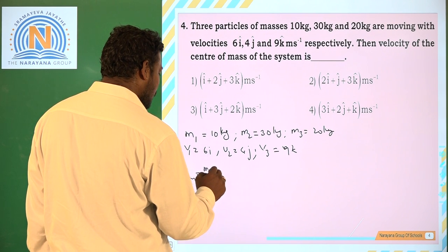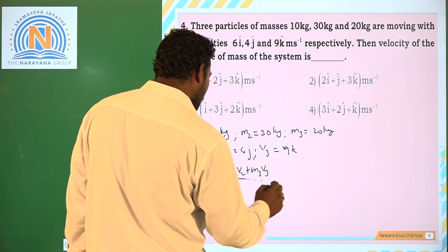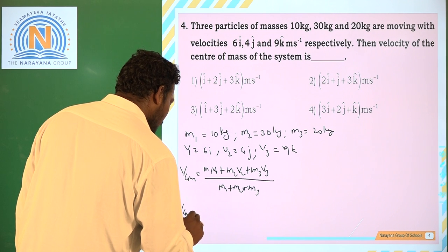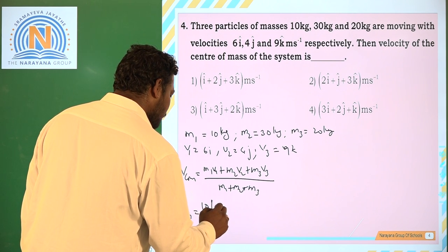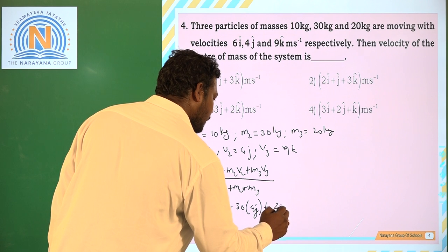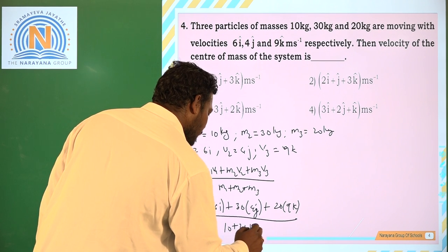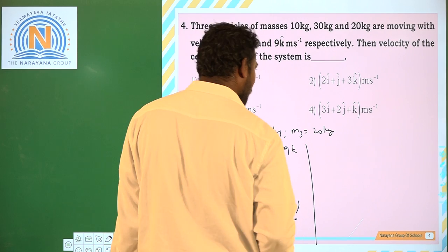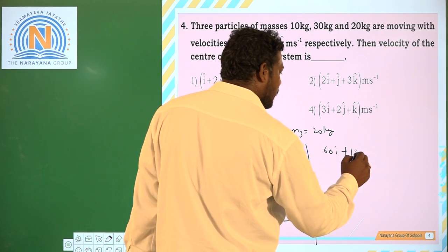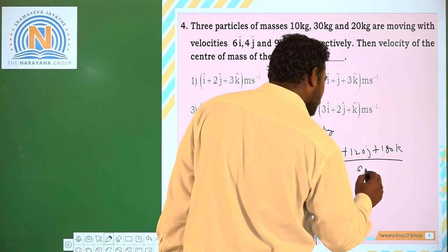Now VCOM = (M1V1 + M2V2 + M3V3)/(M1 + M2 + M3). Now VCOM, what is M1? 10·6i + 30·4j + 20·9k divided by 10 + 30 + 20. 10·6 is 60i, 3·4 is 120j, plus 180k divided by 60. Now VCOM = 60i/60 + 120j/60 + 180k/60.